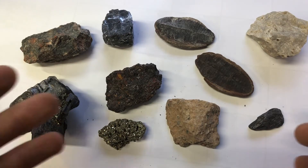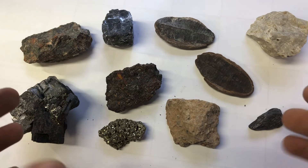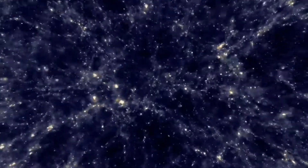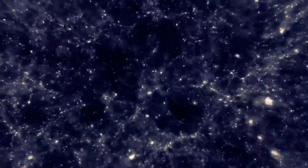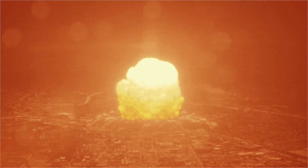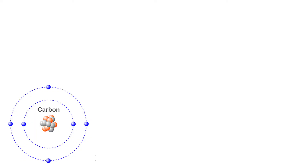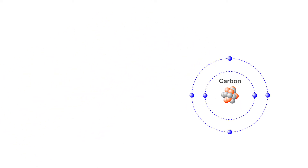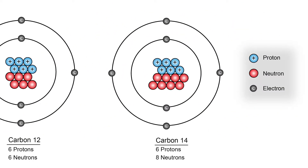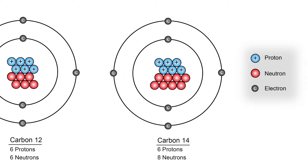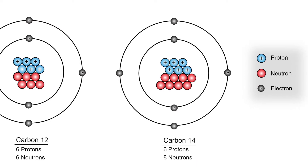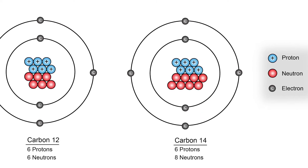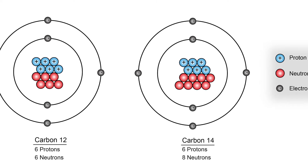Let's first talk about how carbon came to be, and then let's extract some ourselves. In the cosmic scheme, carbon is made when three helium nuclei fuse together to form carbon-12, the most common isotope, making up 98.93% of natural carbon. The rest is radioactive carbon-13 and carbon-14, with carbon-14 having the longest half-life of about 40 years.